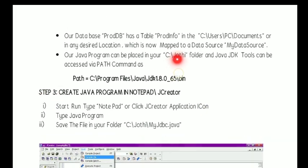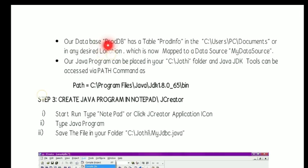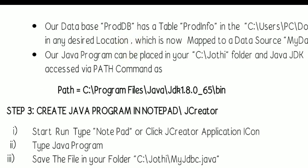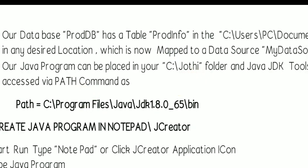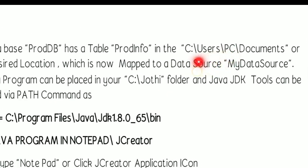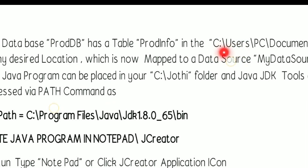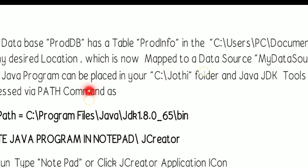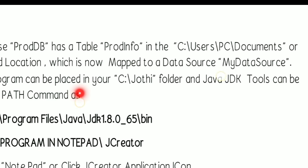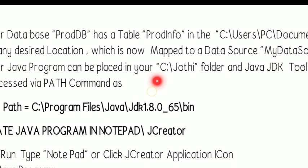So far what we have done is: we have created one database file proddb with a table prodinfo. This file is available in the Documents folder, or you can choose any desired location. Next we have mapped the database file with the Data Source Name my data source in the Control Panel ODBC tool.